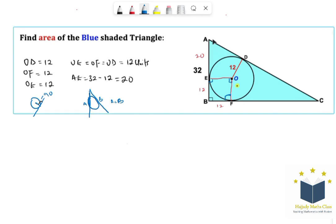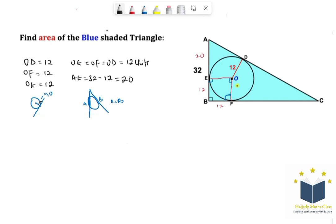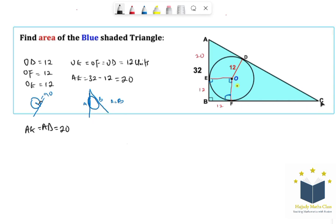So the same thing will be applied here. So that is our AE must be equals to AD, and provided our AE is 20, so definitely AD is going to be 20. So that is another value we have. So we have that AE equals to AD, which is the same thing as 20 units.